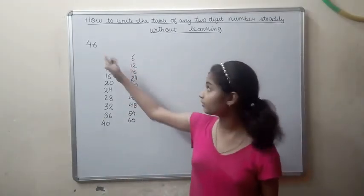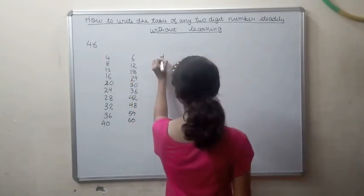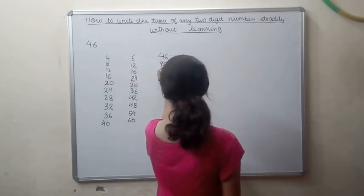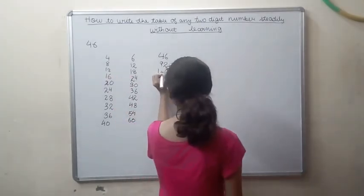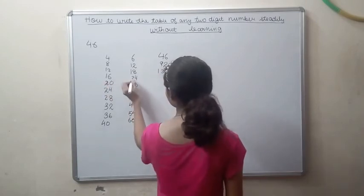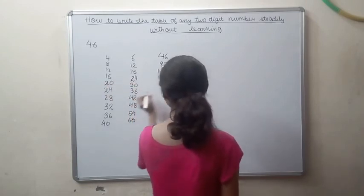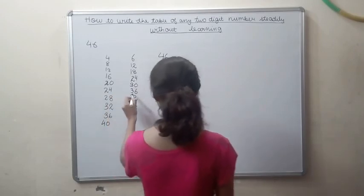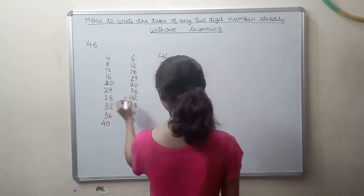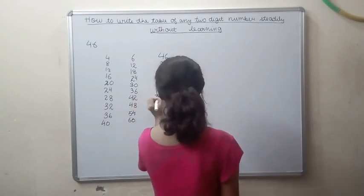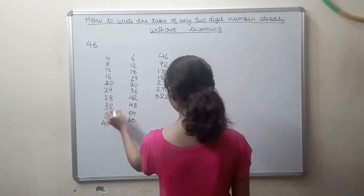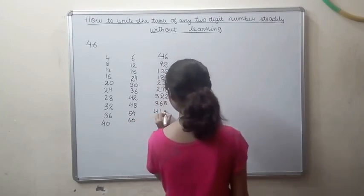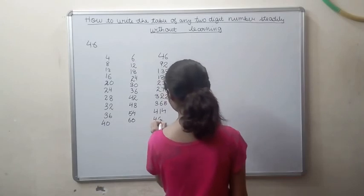We have written these two tables. Now, we will take out the table of 46. 4 and 6, 26, 8 plus 1 and 2, 92, 12 plus 1, 13 and 8, 16 plus 2, 18 and 4, 20 plus 3, 23 and 0. And now, we will do 24 plus 3, 27 and 6, 28 plus 4, now we will do it 32, 2, 32 plus 4, 36 and 8, 36 plus 5, 41 and 4 and 40 plus 6, 46 and 0.